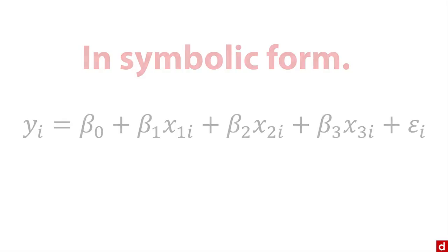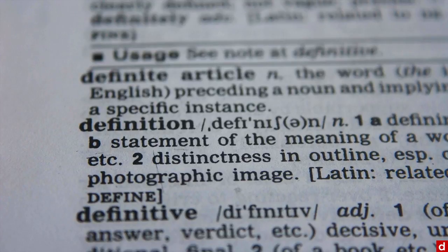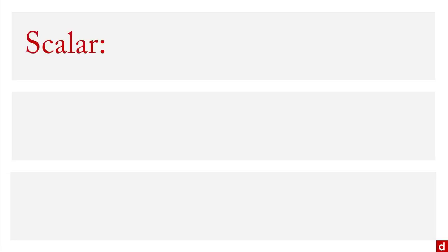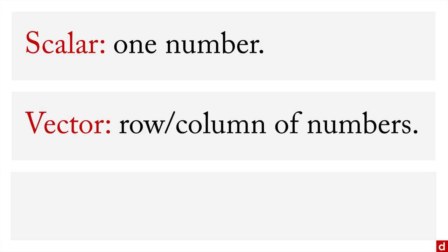Before we get started with matrix algebra, we need to talk about a few new words. Maybe you're familiar with them already. The first is scalar, and this means a single number. And then a vector is a single row or a single column of numbers that can be treated as a collection. That usually means a variable.